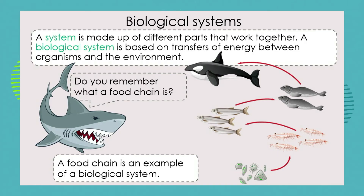A system is made up of different parts that work together, and a biological system — a living system — is based on transfers of energy between organisms, within organisms, and between organisms and the environment.